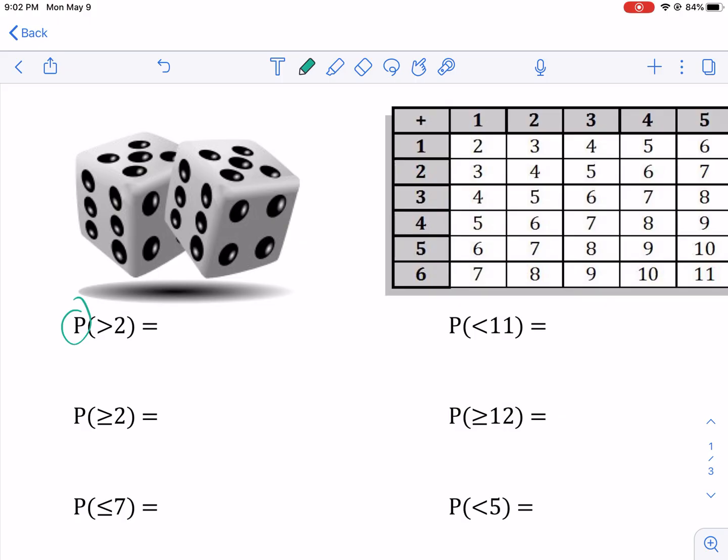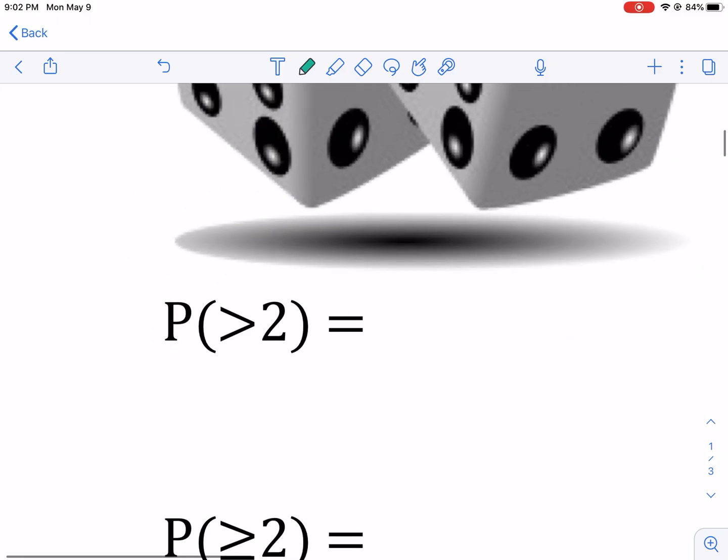Essentially, anytime you see that capital P, it's talking about the probability or likelihood of an event happening. And the event that it is asking about or in question is the one that is in the parentheses. So this is just saying what is the probability that something bigger than a two rolls?